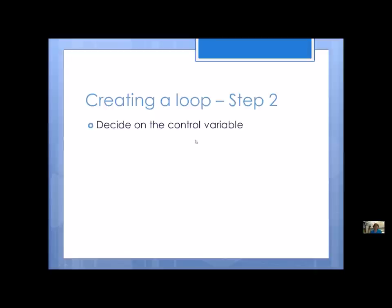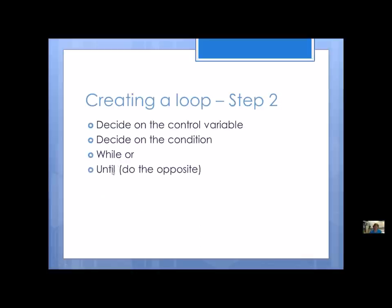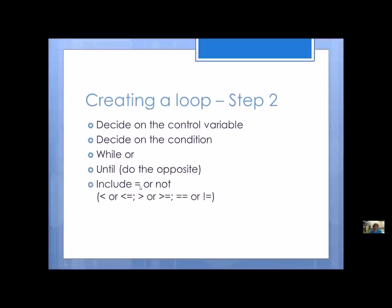Step two is to decide on your control variable and decide on the condition. When you're reading the description, does it say 'while' or does it say 'until'? If you see the word 'until,' you're going to do the opposite. You also have to decide: do I use equals or not? Is it less than or less than or equal to? Greater than or greater than or equal to? Equals or not equals? These are all decisions you have to make.